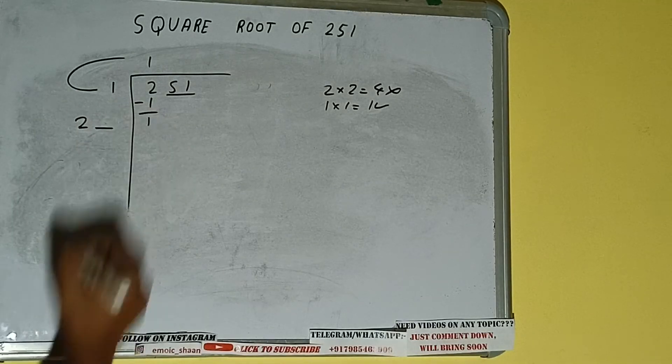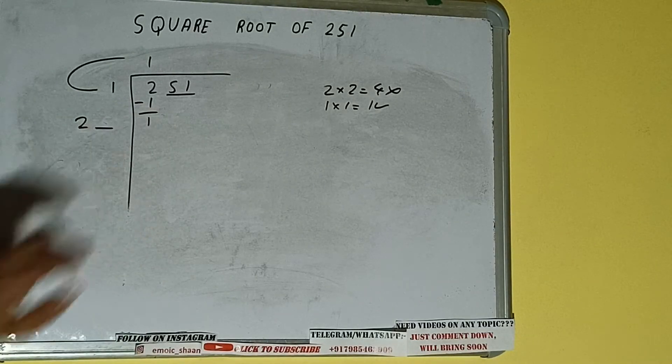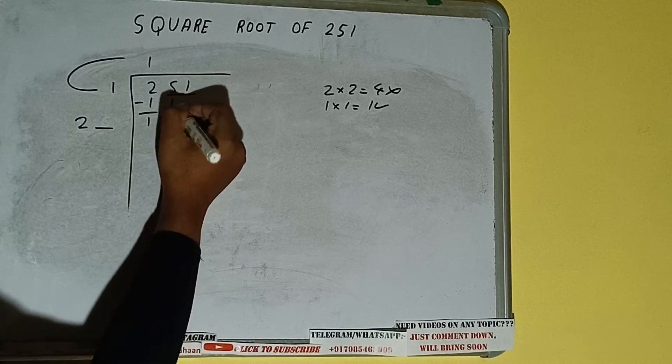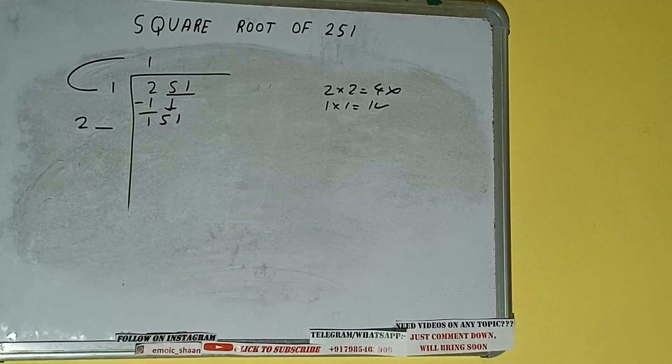Write it here and keep one digit extra, and this number we need to make it big. So bring the next pair down and it will be 151.